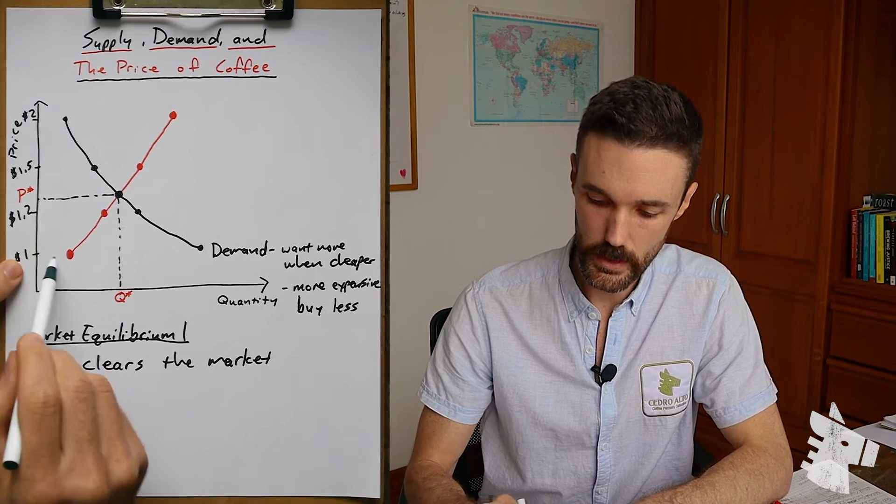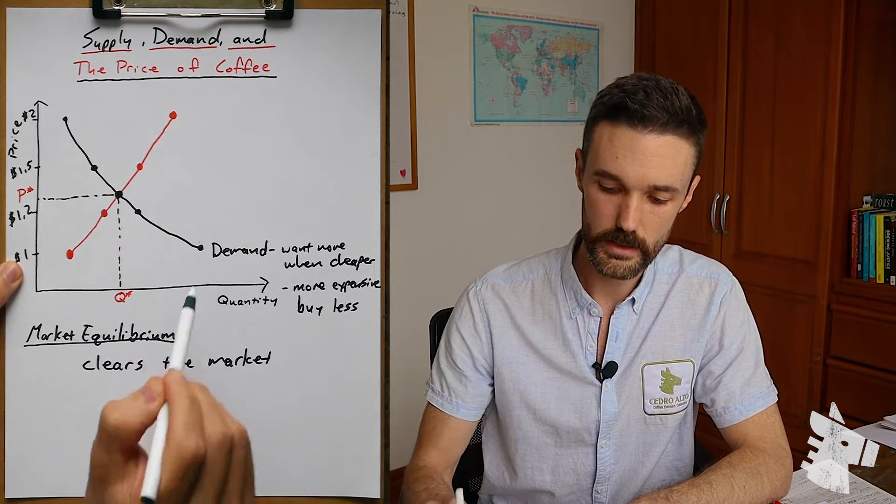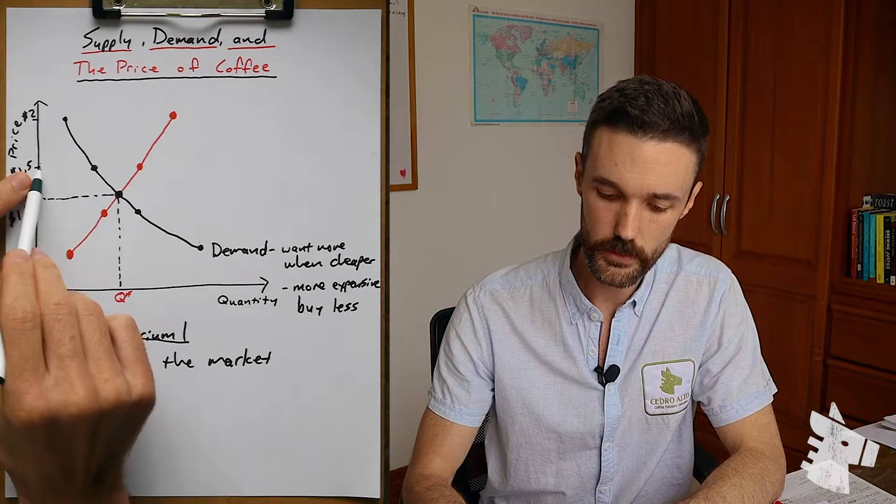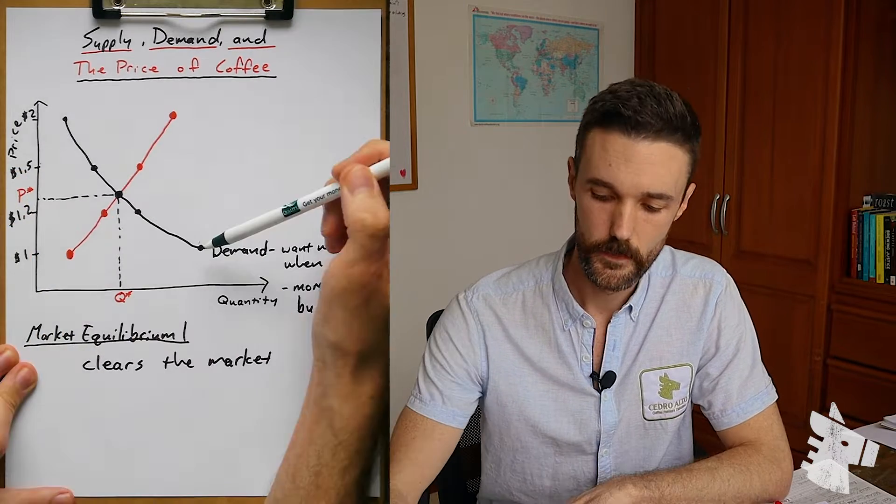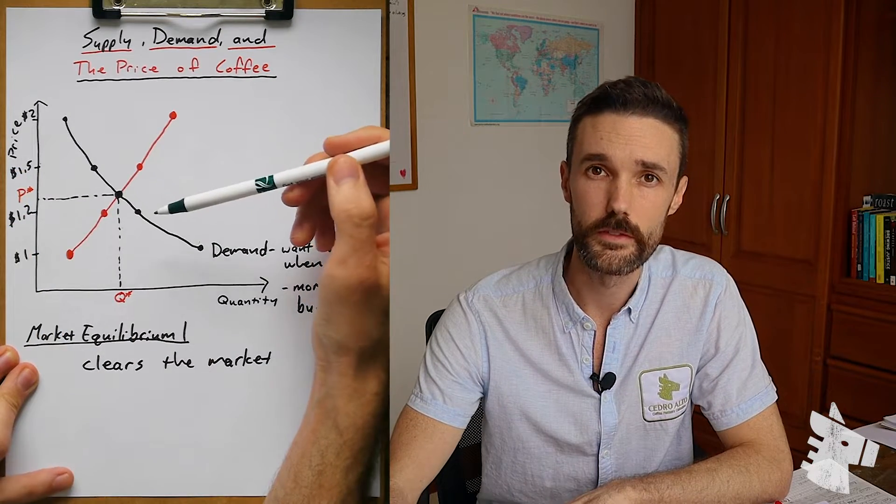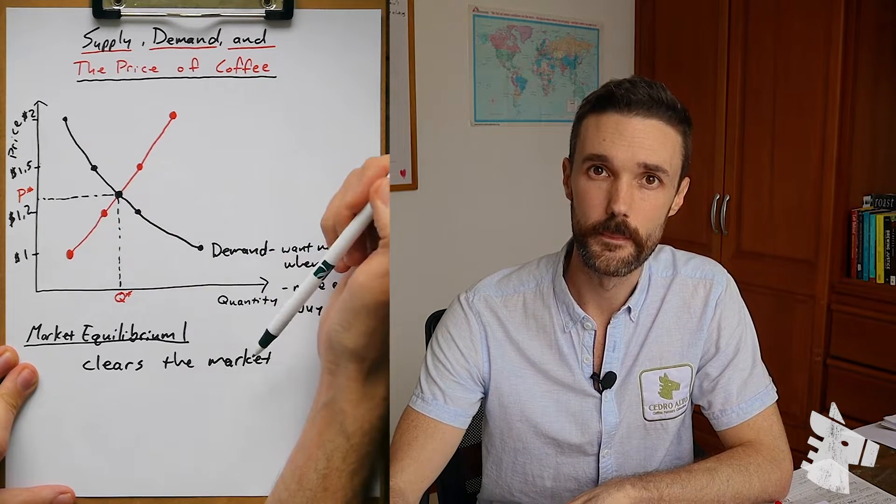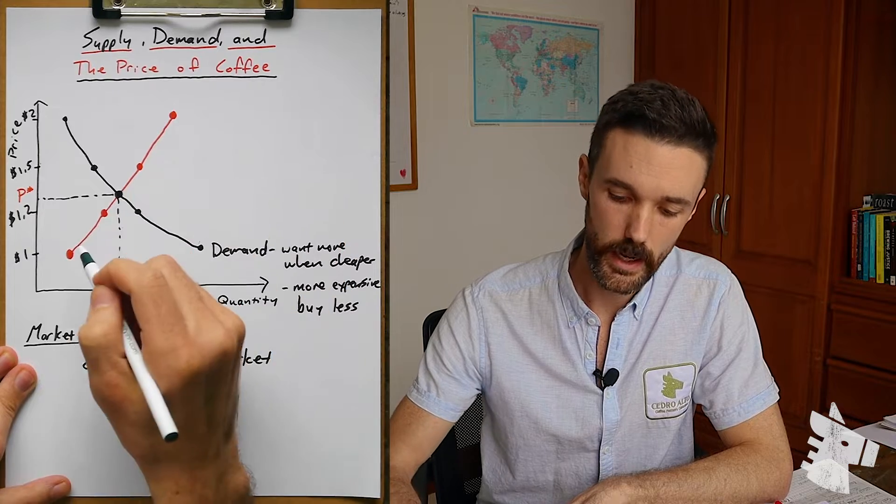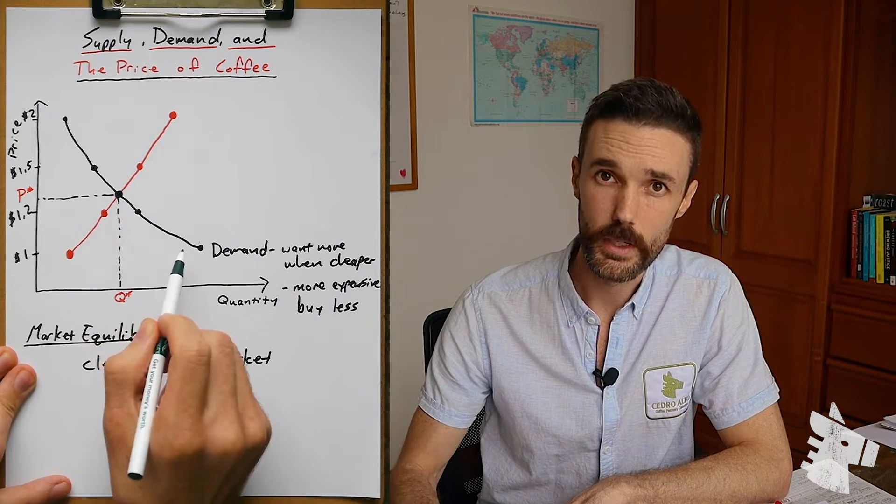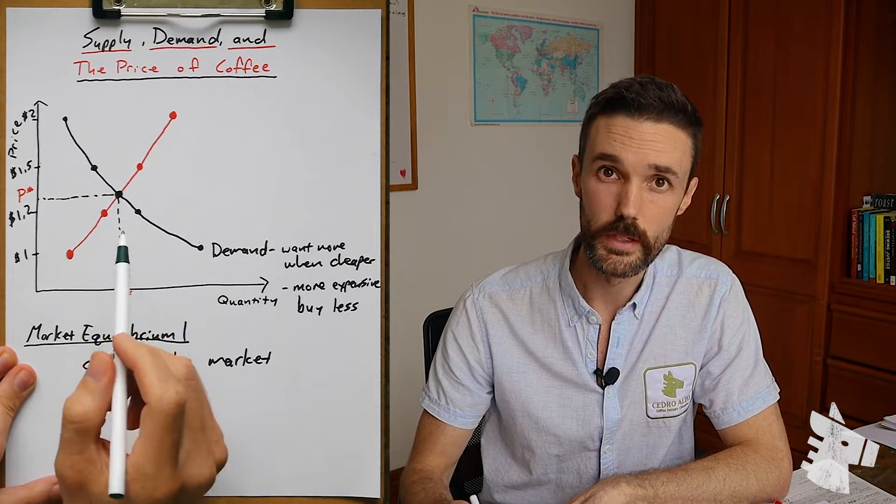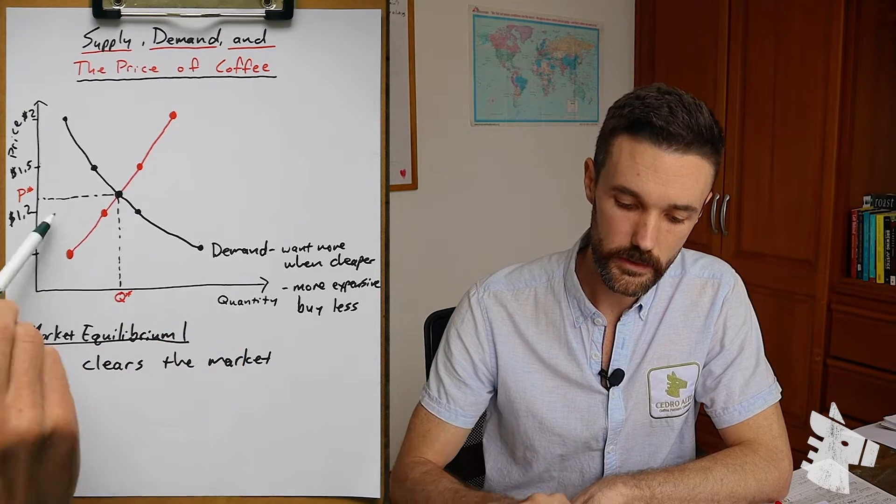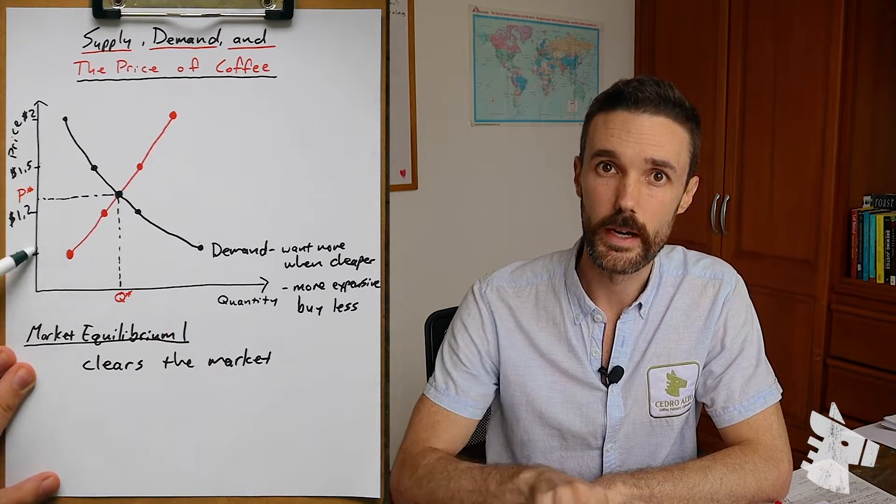So if price is at $1, this quantity is demanded. If price is at $1.50, this quantity is demanded. This demand curve shows the quantity of coffee that would be purchased at any price level at one moment in time. The same goes for the supply curve. At one moment in time, all of these quantities expressed on the x-axis would be produced and offered on the market given any of these price points expressed here on the y-axis.